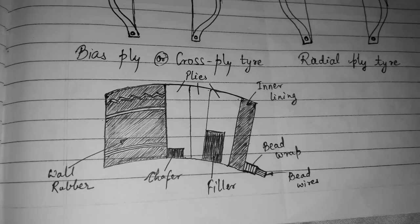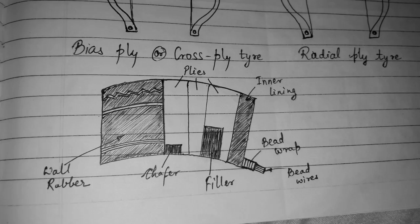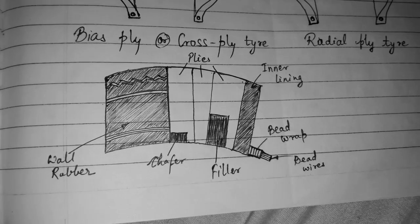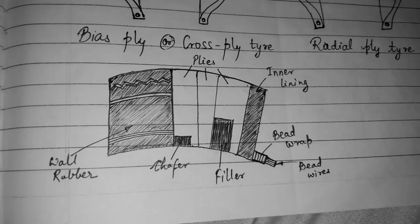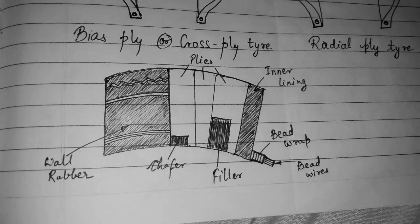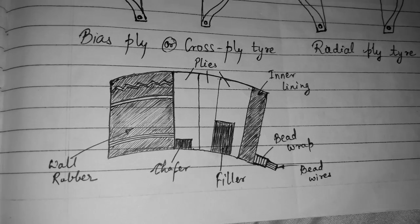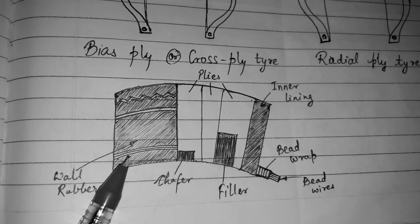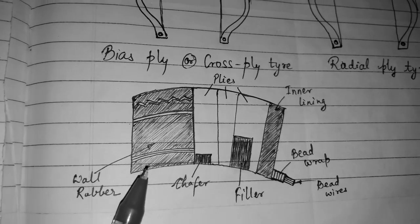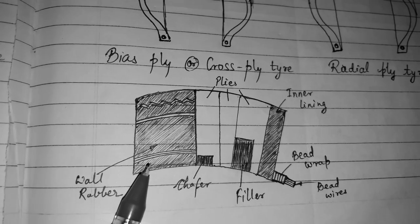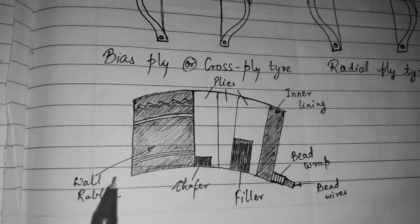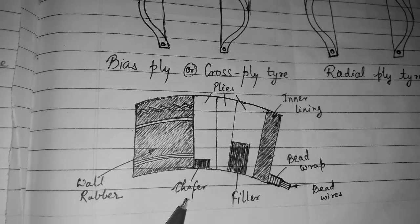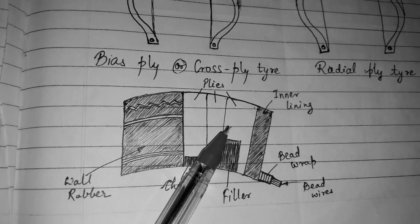Here you can see the different parts of the tire. This cross-section and the different parts are similar for both the cross ply tire and radial ply tire. You can see the wall rubber, which is the outer part you normally see on the tire.